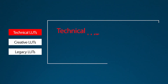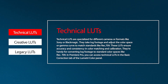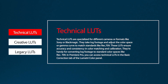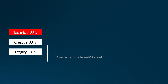Technical LUTs are specialized for different cameras or formats like Sony or Blackmagic. They take log footage and adjust the color space or gamma curve to match standards like Rec.709. These LUTs ensure accuracy and consistency in color matching and calibration. They are handy for converting log footage to standard color spaces like Rec.709. In Premiere Pro, you can access technical LUTs in the Basic Correction tab of the Lumetri Color panel.